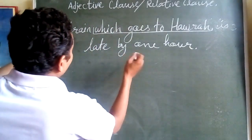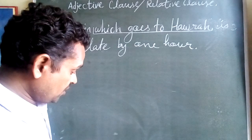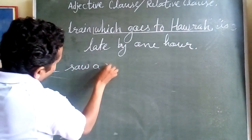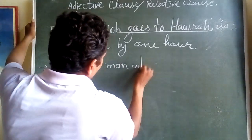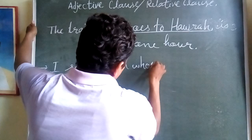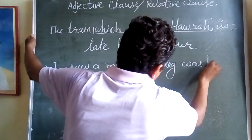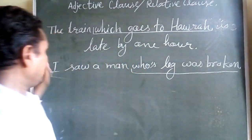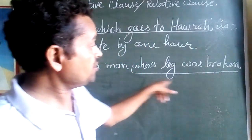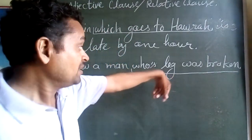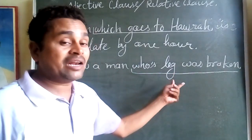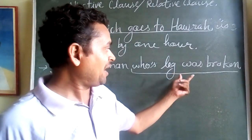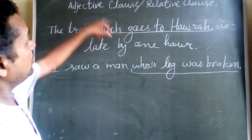Clear concept? Now come to the next example. 'I saw a man whose leg was broken.' Here, 'I saw a man' is the principal clause, and 'whose leg was broken' is the adjective clause — because this clause is qualifying about the man. What type of man is this? The man who has broken legs. So this is an adjective clause.